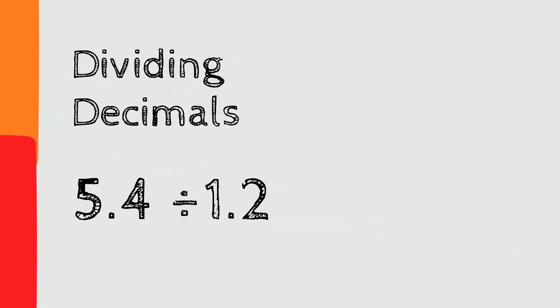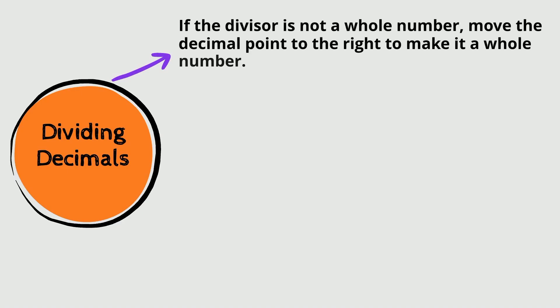Let's follow these simple steps. If the divisor is not a whole number, move the decimal point to the right to make it a whole number. Next, move the decimal point in the dividend the same number of places. Next, write the decimal point directly above the decimal point of the dividend. And finally, divide as usual.